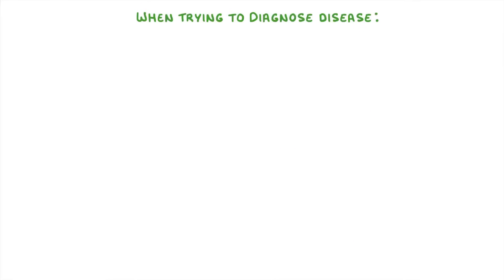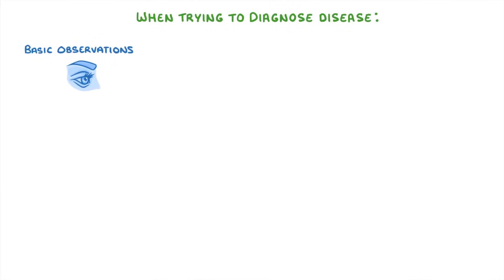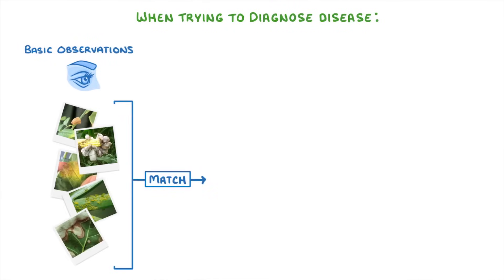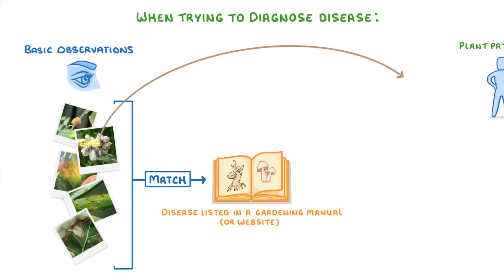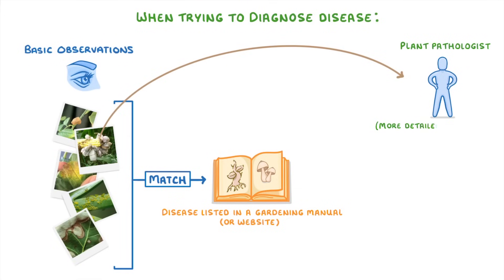When trying to diagnose disease, the easiest thing to do is to take basic observations and try to match the symptoms that you see to a disease listed in a gardening manual or a website. If that fails, then you could send a sample of the diseased plant to a plant pathologist, which is somebody who specialises in plant disease, and will be able to do more detailed testing.